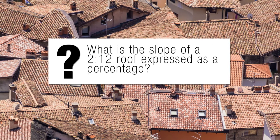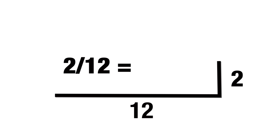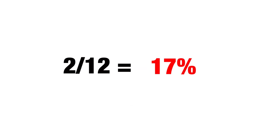Next question: what is the slope of a 2-in-12 roof expressed as a percentage? To find the percentage of any slope, take the vertical distance and divide it by the horizontal distance. We have a vertical distance of 2 units divided by a horizontal distance of 12 — so 2 divided by 12 is 0.17. The answer is 17%.